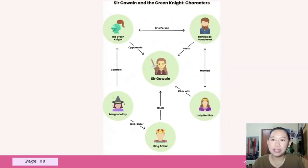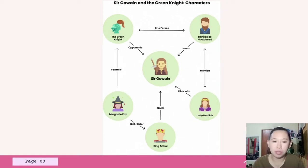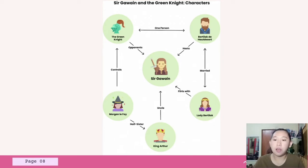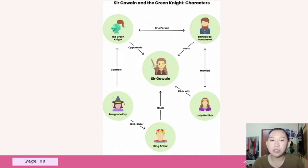Overall, we can see that Sir Gawain is at the center because he is the main character of the poem. In the upper-left corner we have the Green Knight, who is his opponent. In the upper-right corner we have Bertilak the Host. Bertilak and the Green Knight are the same person. Lady Bertilak is married to Bertilak but still flirts with Sir Gawain. Morgan le Fay is the mastermind of the poem — she controls everything. She is a half-sister of King Arthur, and since King Arthur is the uncle of Sir Gawain, Morgan le Fay becomes the aunt of Sir Gawain.